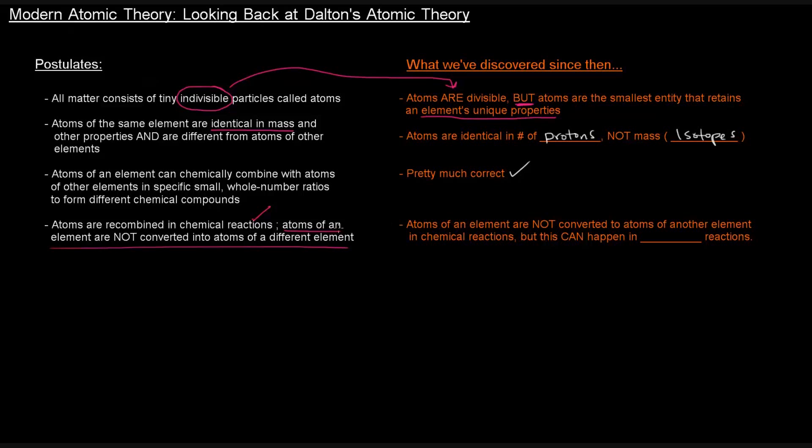Because atoms of an element are not converted to atoms of another element in chemical reactions, but this can happen in nuclear reactions, which we have yet to go over. But the point is that atoms of a particular element can be converted into atoms of a different element, but not via chemical reactions, only via nuclear reactions.